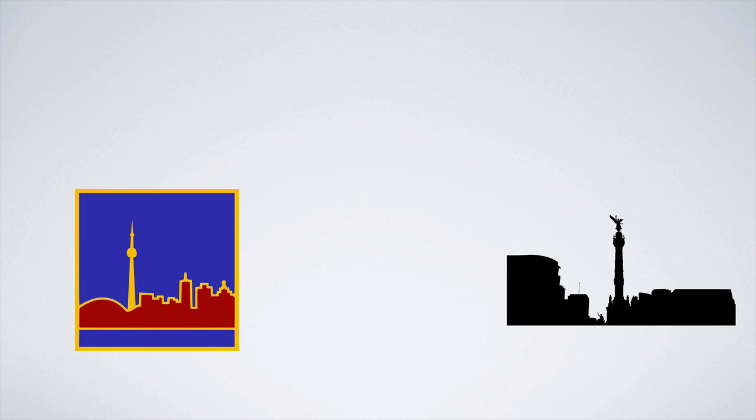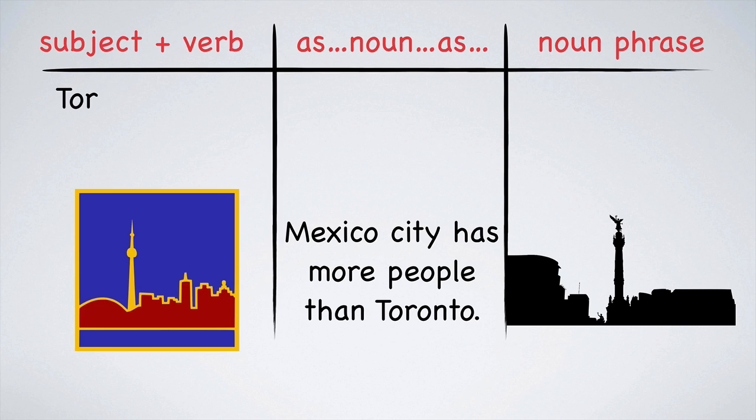Emily, where were you born? I live in Toronto. Do you know how many people live in Toronto? Three million people. And Tyler, where are you from? I'm from Mexico City. How many people live in Mexico City? Twenty-five million. That's a lot. So Mexico City has more people than Toronto. Toronto doesn't have as many people as Mexico City.